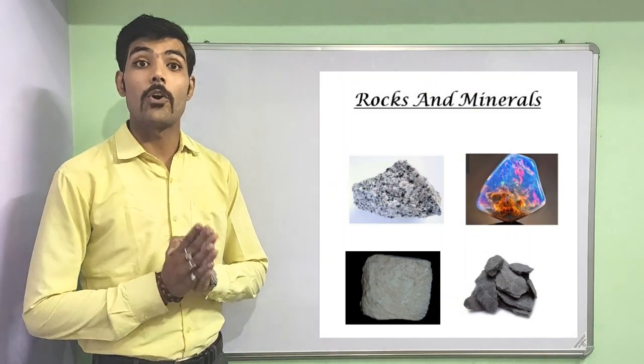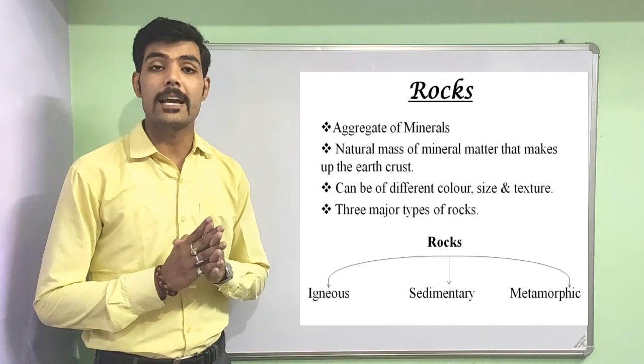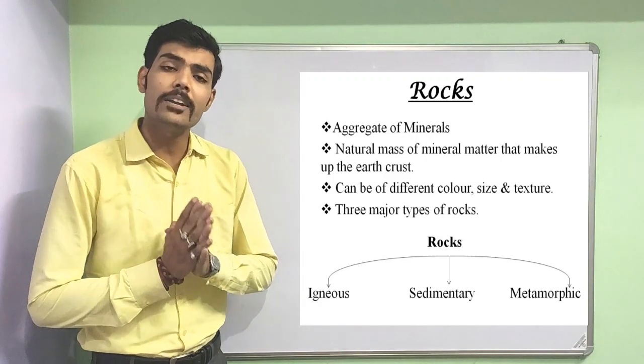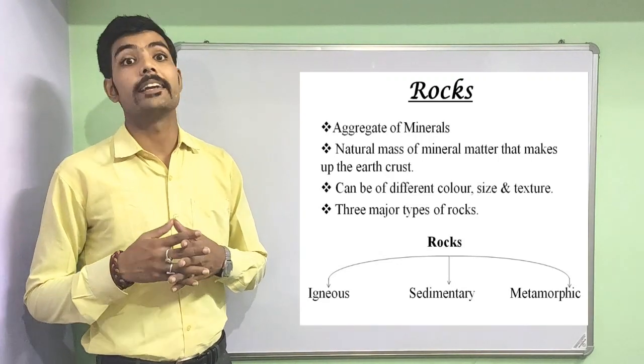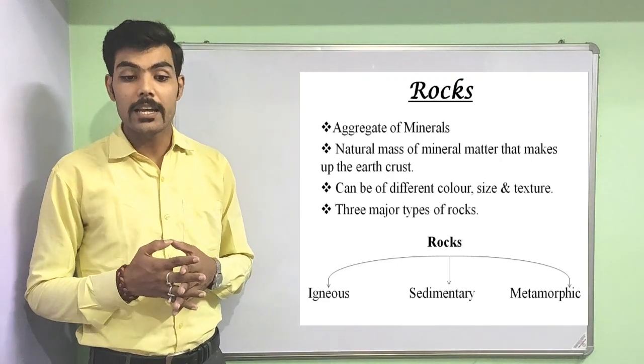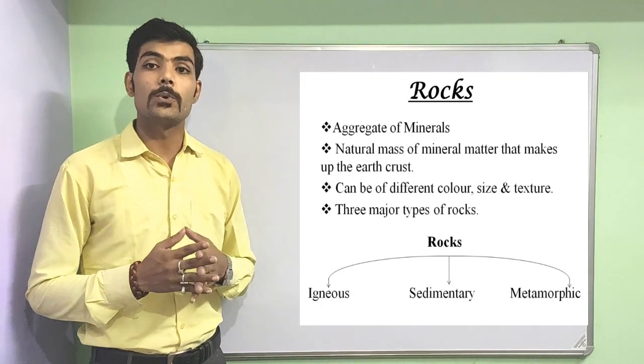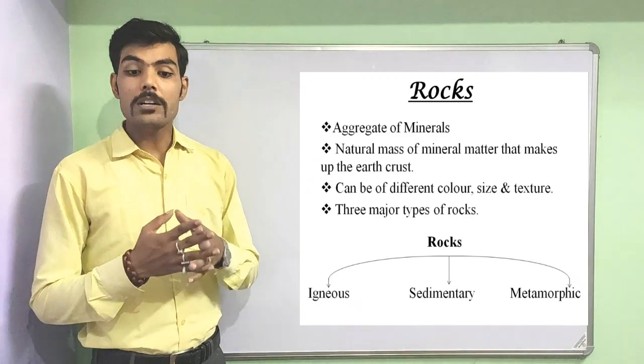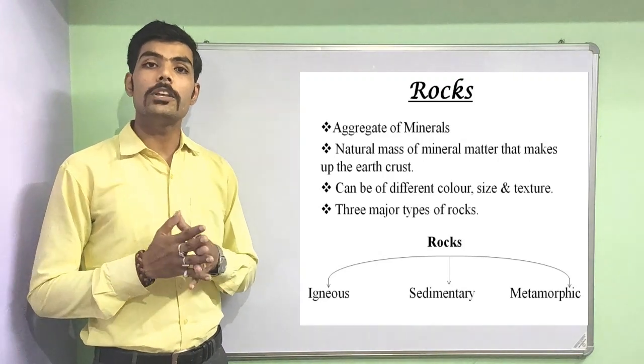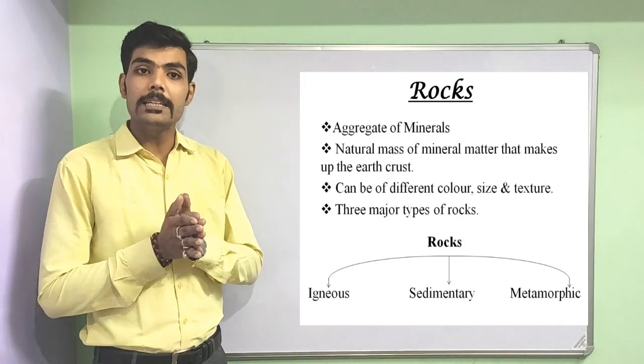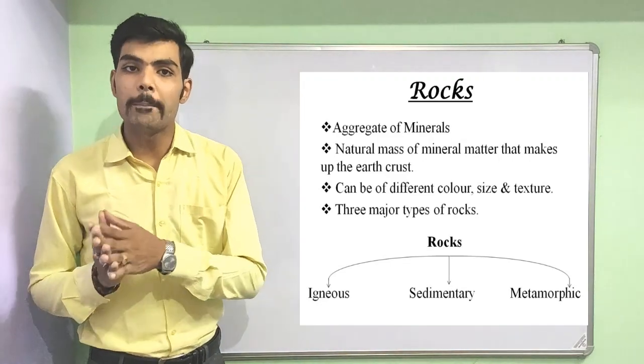Now it's time to discuss about rocks and minerals. The earth's crust is made up of various types of rocks. Do you know what is rock? How can we define rock? So rock is an aggregate of minerals or in other words we can say any natural mass of minerals that makes up the earth's crust is known as rocks. Rocks can be of different colors, size, texture etc. When we talk about the rocks, this can be basically divided into three types that is igneous, sedimentary and metamorphic.